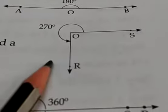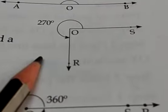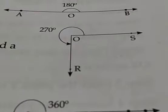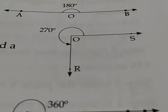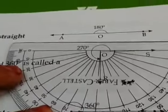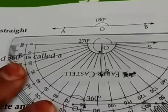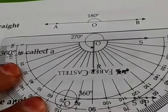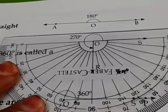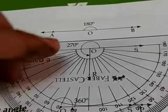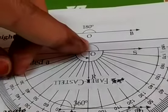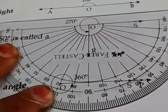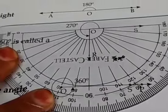Next, reflex angle. An angle whose measure lies between 180 and 360 degrees. If I reverse the protractor here — I am reversing the protractor and placing it on the origin — and then I get the measurement. That is nothing but a reflex angle.